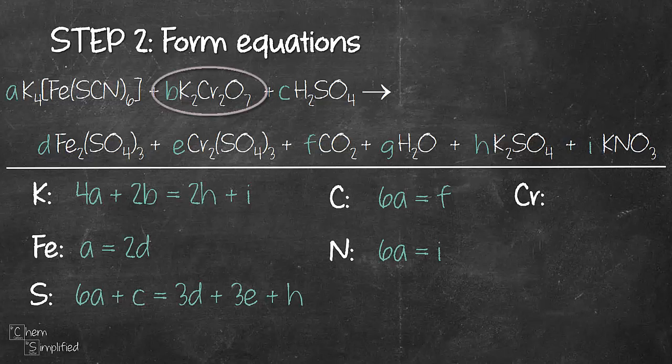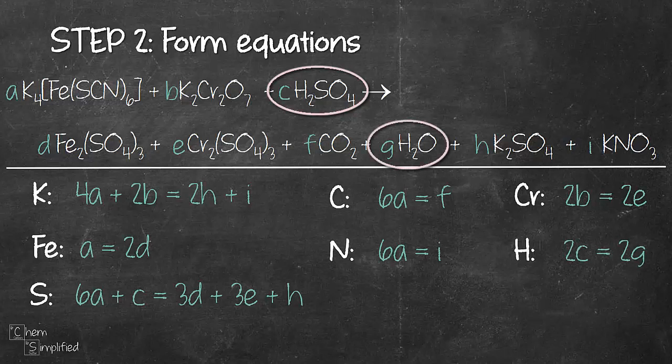Chromium: 2b equals 2e. Hydrogen: 2c equals 2g.